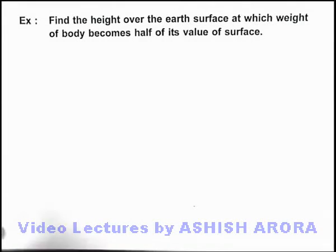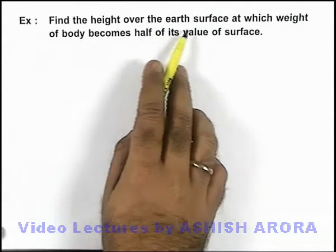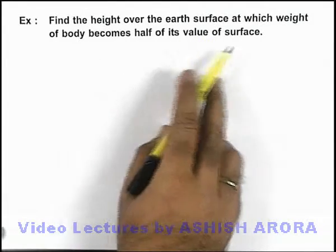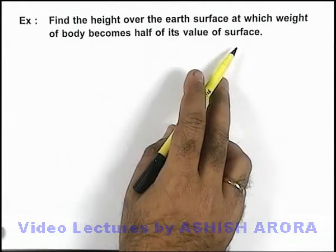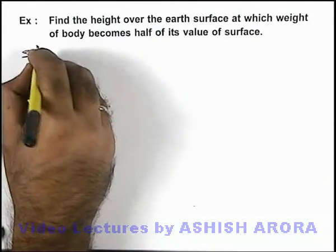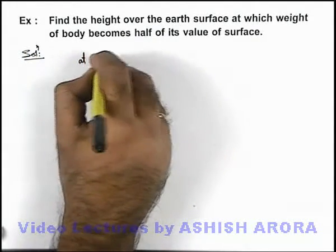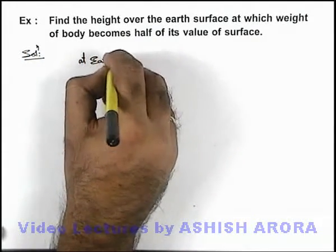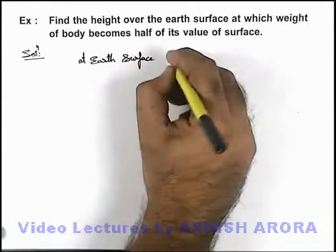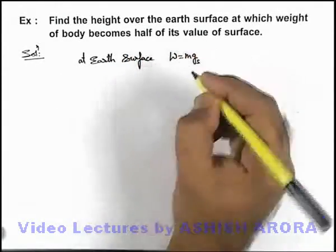In this example, we are able to find the height over the Earth's surface at which the weight of a body becomes half of its value at the surface. At Earth's surface, if we calculate the weight of the body, it can be written as mg_s.